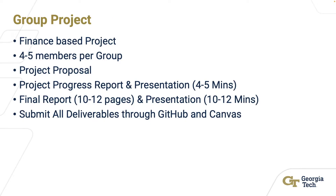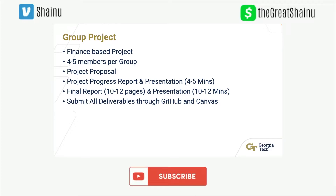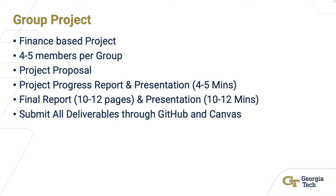Now let's talk about group projects. Group projects can sometimes be fun and sometimes the worst experience you'll ever have in a course. What they expect is a finance-based project. For example, our group analyzed how gun manufacturers' stocks get impacted based on mass shooting events. You need to pull data from websites like Kaggle or other stock portfolio resources. Groups can have about four to five members.